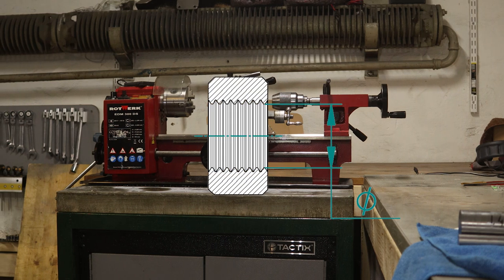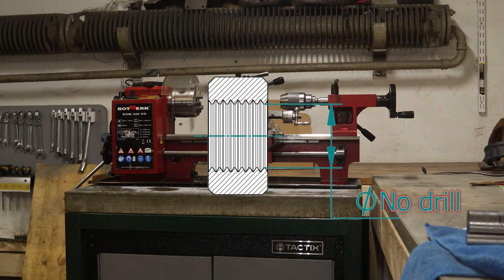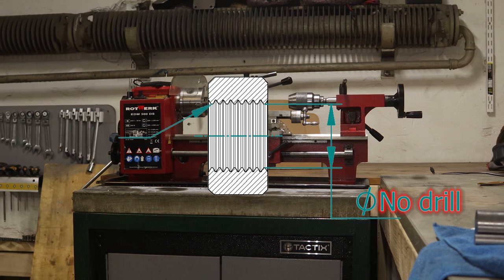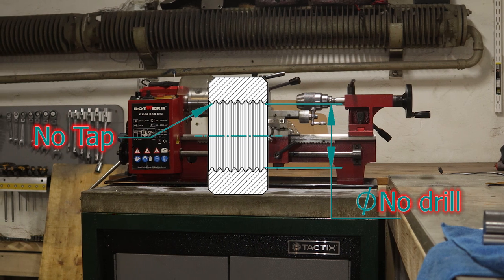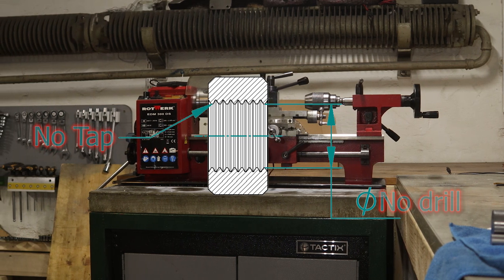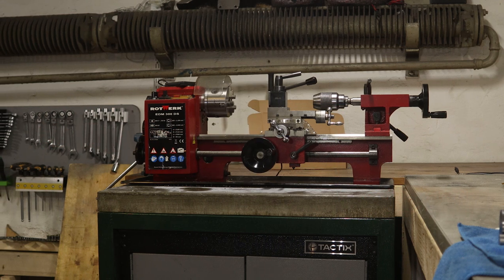When you need a hole you don't have a drill for, then you need a boring bar. If you have to cut a thread you don't have a tap for, then you need an internal threading tool. Today we'll make a tool that can do both.